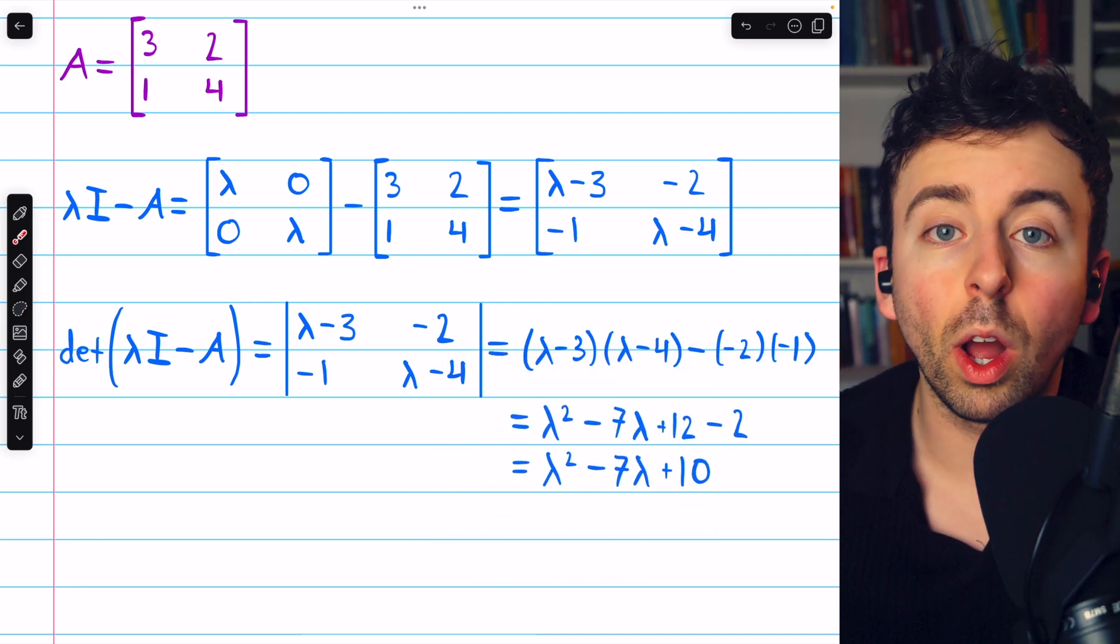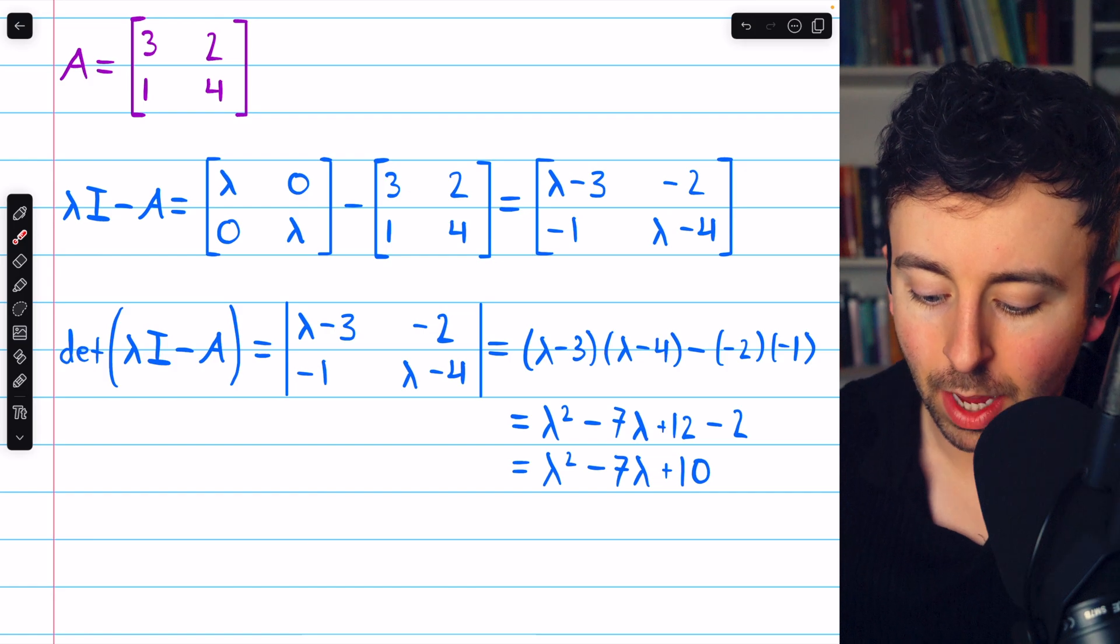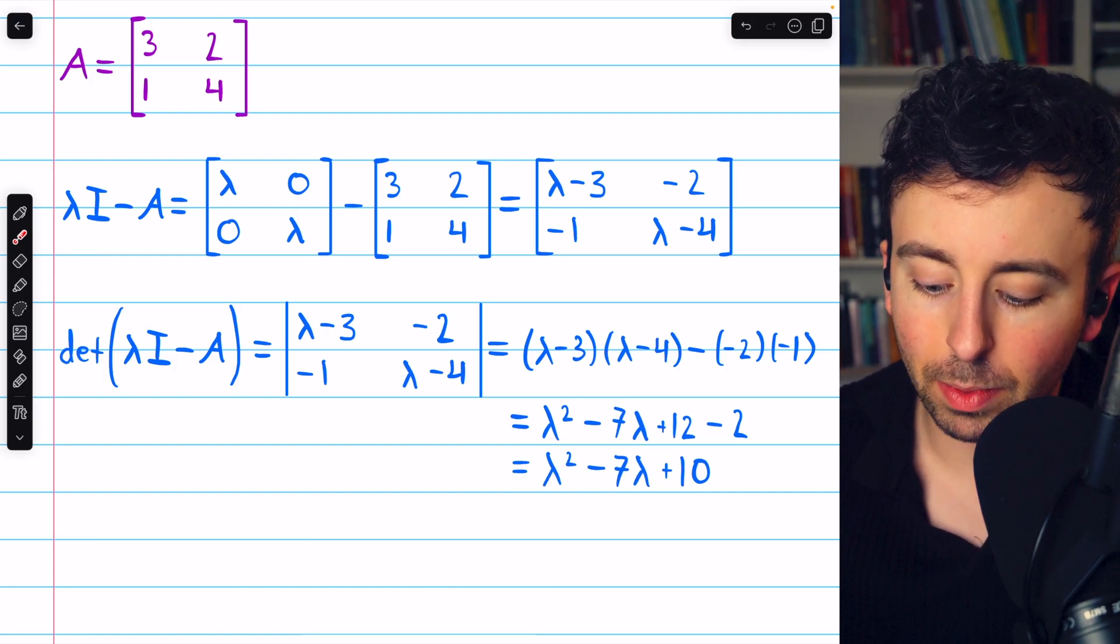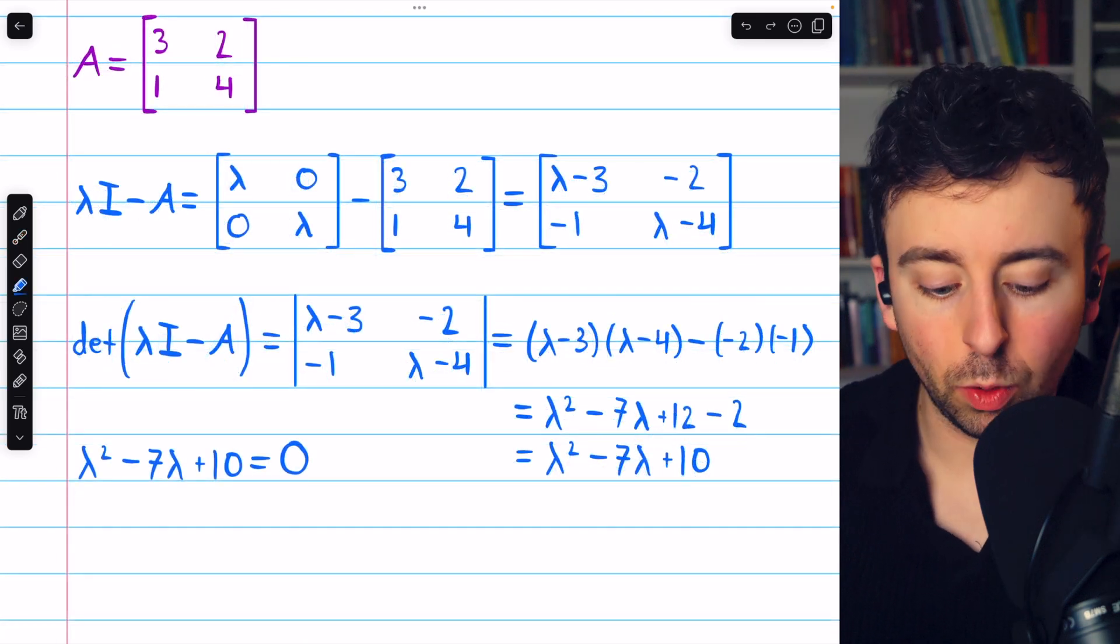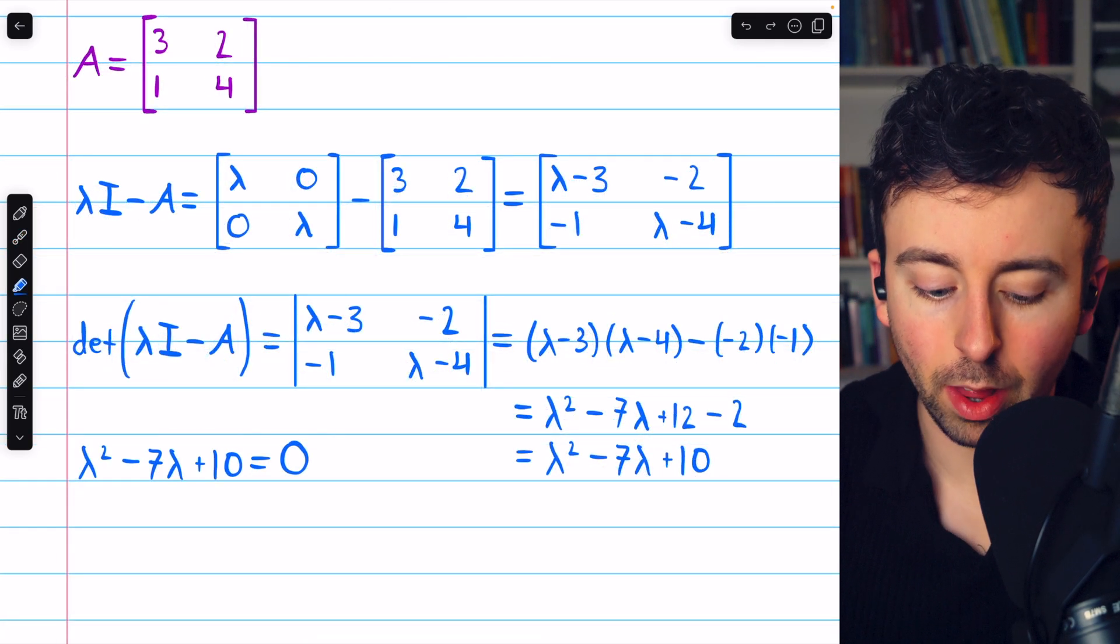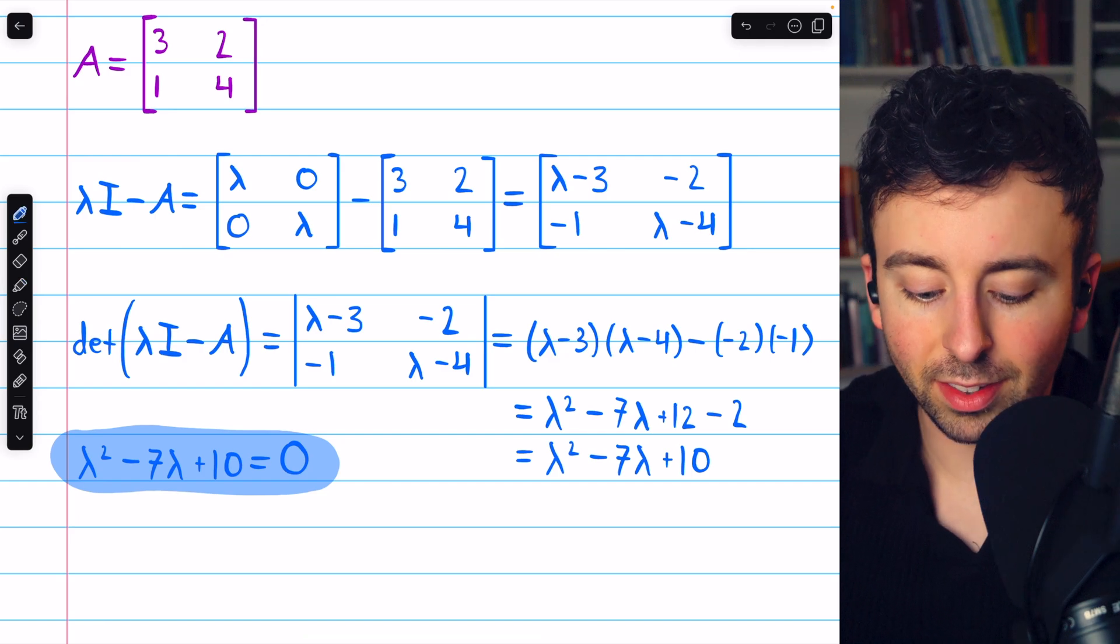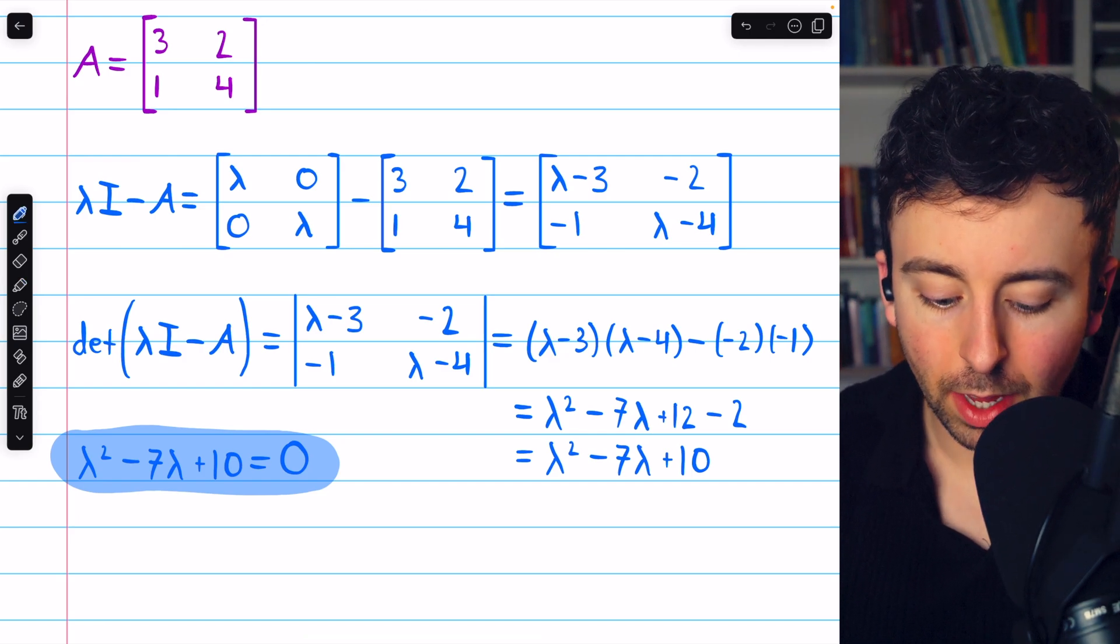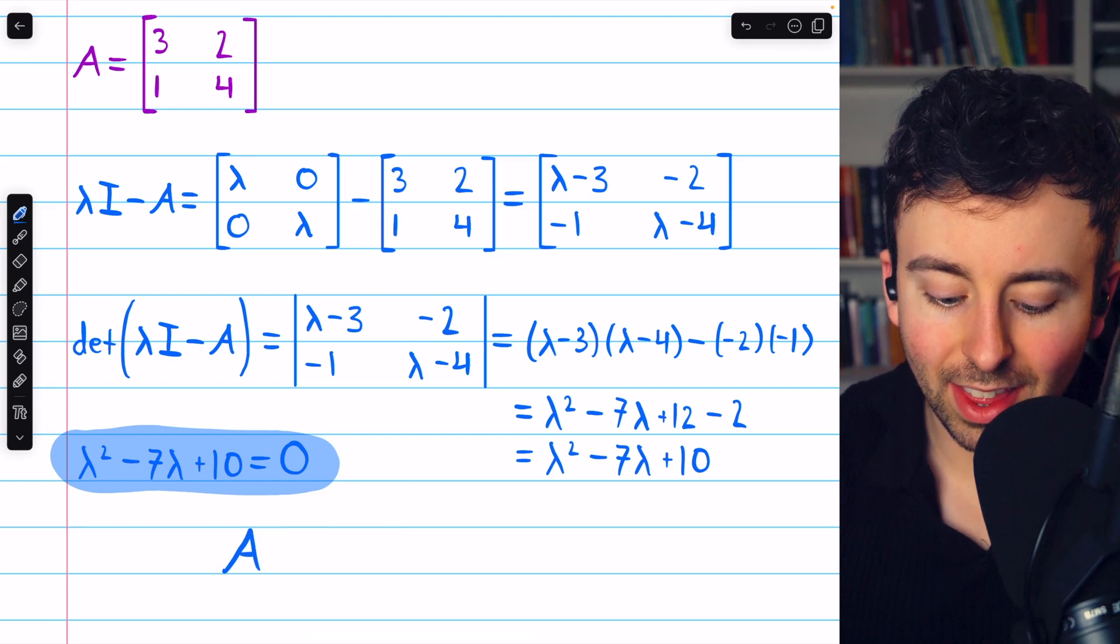This turns out to just be a quadratic in lambda. And once we fully simplify it, it's lambda squared minus seven lambda plus ten. Then recall, we take this polynomial, called the characteristic polynomial, and set it equal to zero, because any lambda satisfying this equation is going to result in this system,